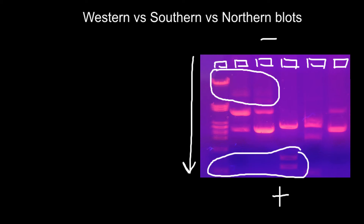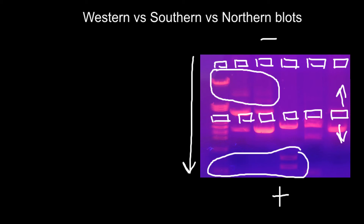We can also tell, looking at this picture, that this is not a protein gel electrophoresis, because proteins can be positively and negatively charged. Usually we load proteins in the middle because we don't know in which direction they're going to run — they can run in either direction, and if we load proteins at the edge, they can run off. So most likely these gel electrophoresis results are for either RNA or DNA. All molecules are separated depending on their three-dimensional form, molecular weight, and size.